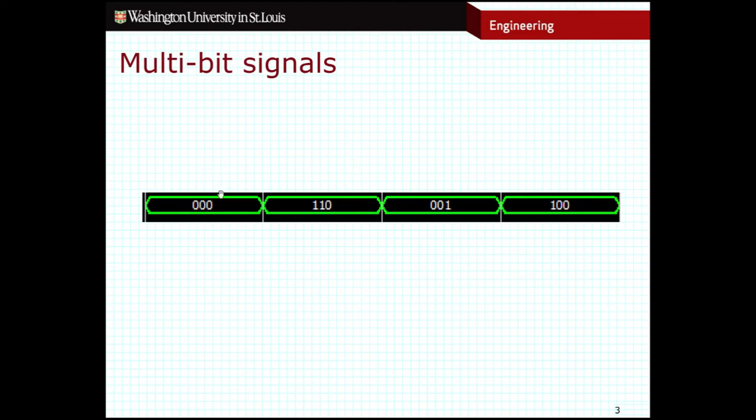So one way that we can represent multiple bits in our timing diagrams is to simply list out all of the bits that are involved. In this particular case, I have three bits here, so I have a three-bit signal, and I'm just going to list out all of the bits in the entire signal.